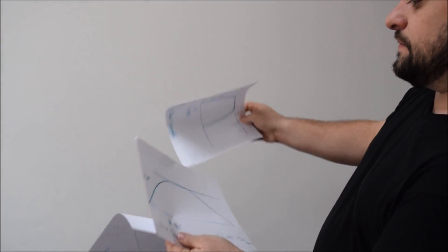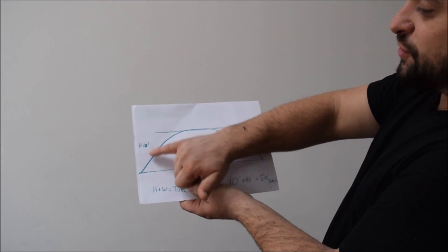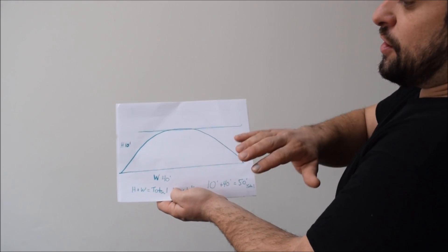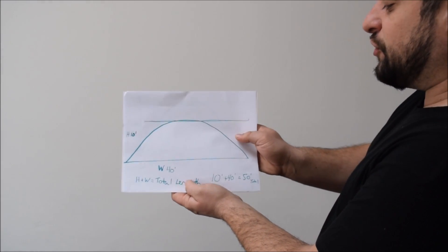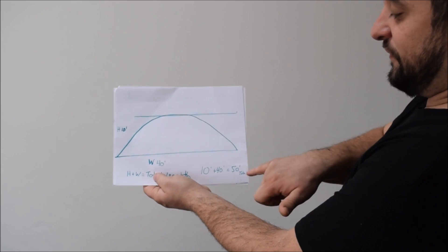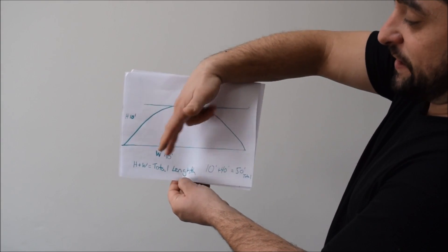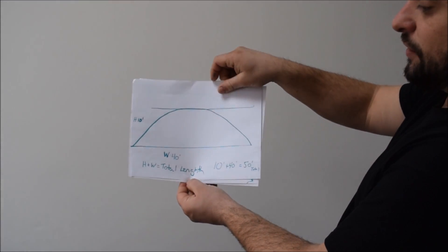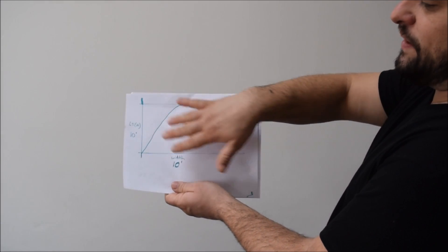For the second formula, our height is only ten feet but our width is forty feet. When your height is less than your width, all you do is add those two numbers together. Ten feet plus forty feet equals fifty feet total. That's the formula when your height is less than your width.